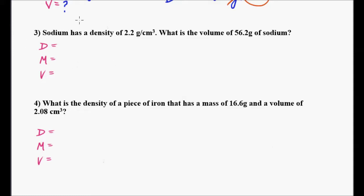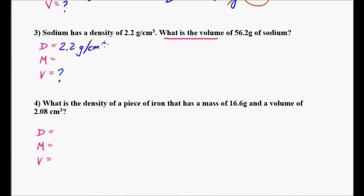Number three is very similar to number one and two. In this problem, sodium has a density of 2.2 grams per cubic centimeter, and we're given the mass of 56.2 grams of sodium. So if you look at this, it's asking what is the volume — I'm going to put a question mark for volume. My density is 2.2 grams per cubic centimeter and the mass is 56.2 grams.